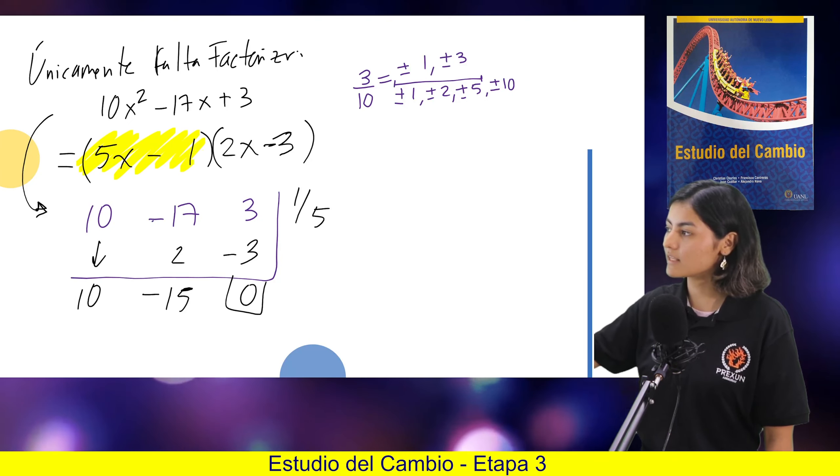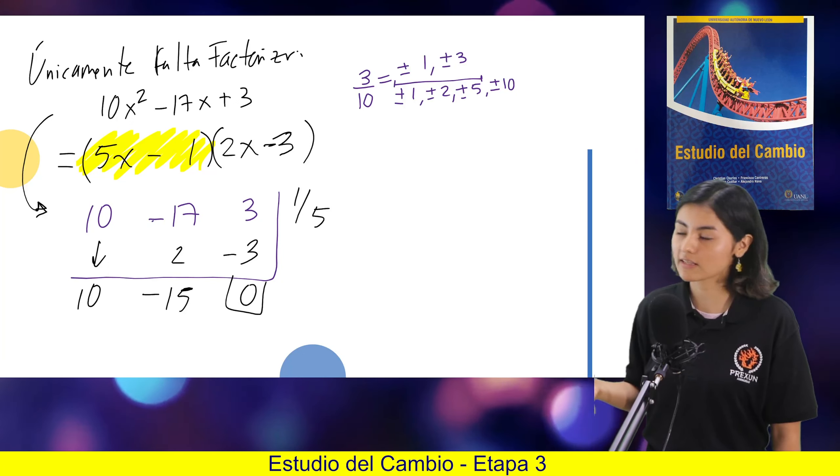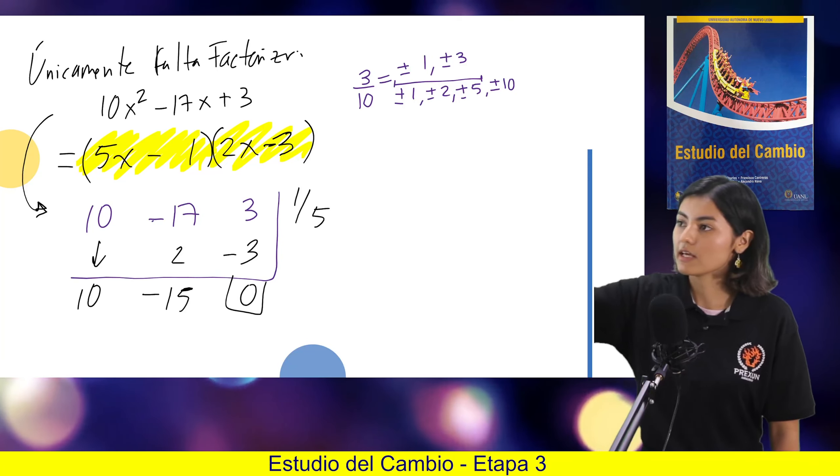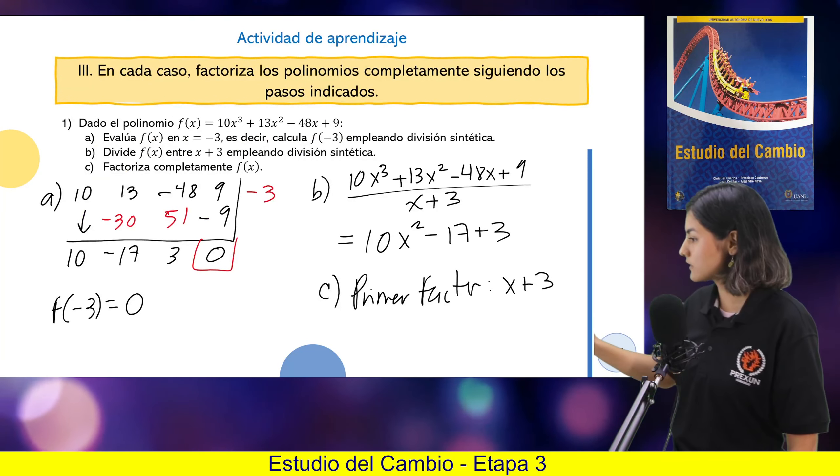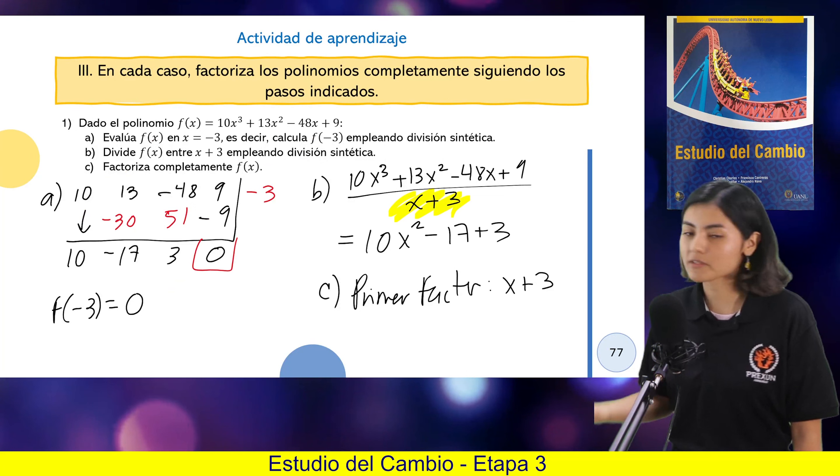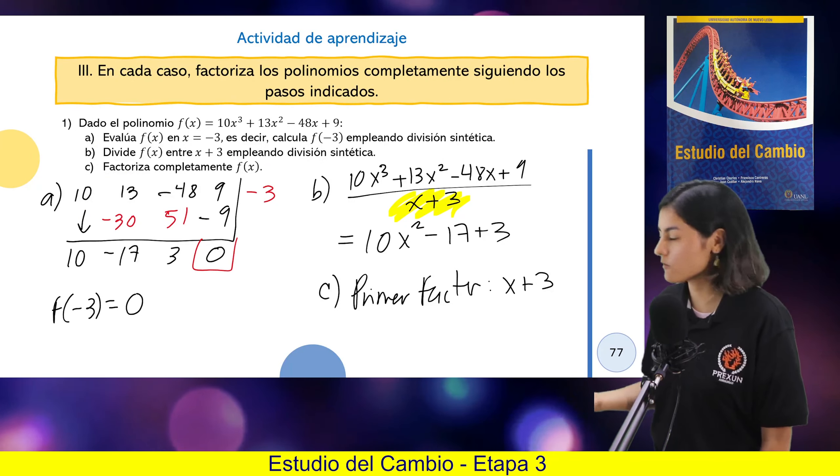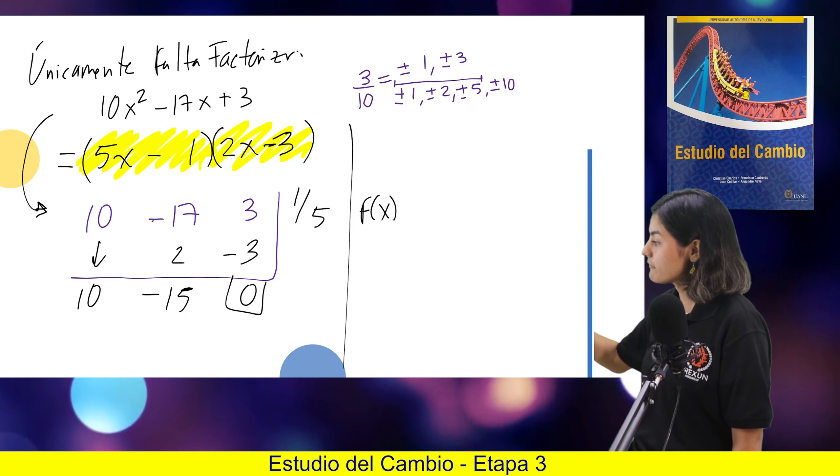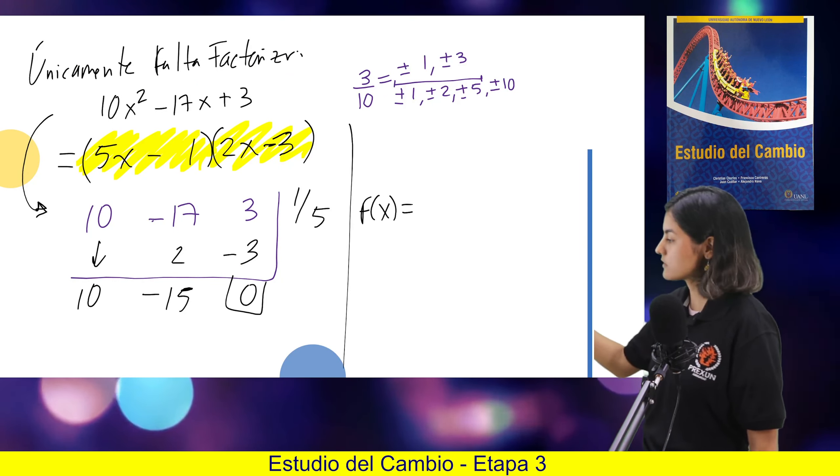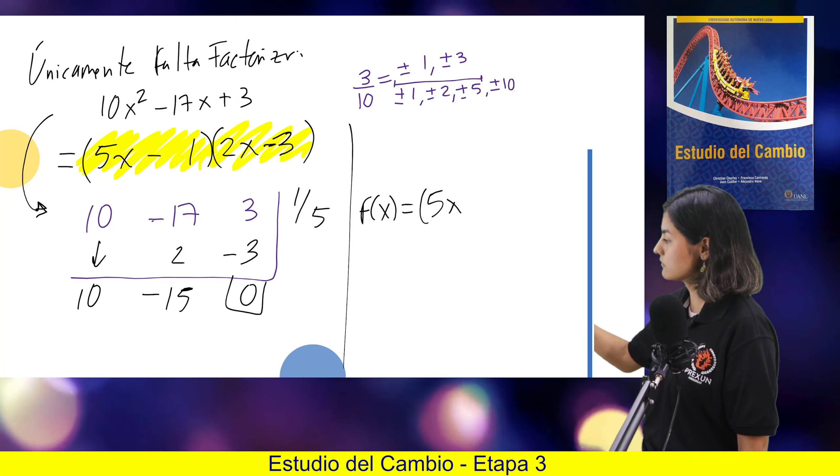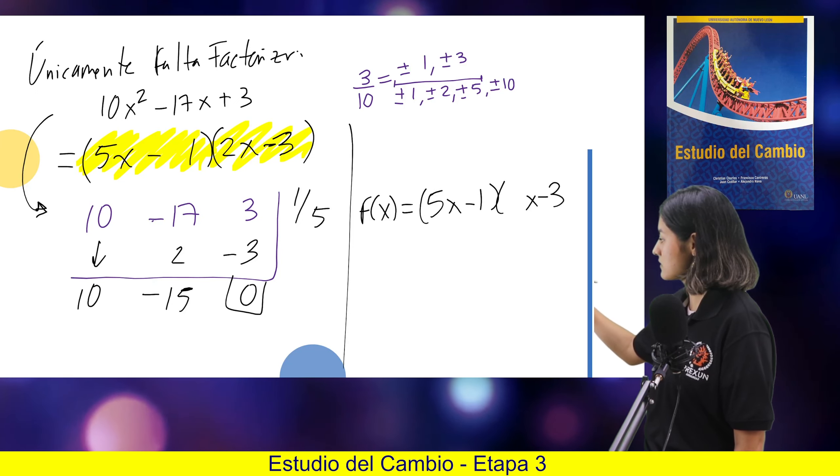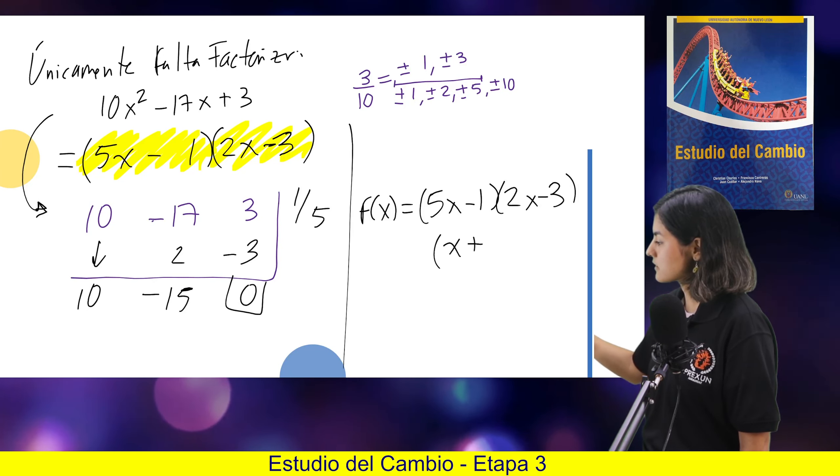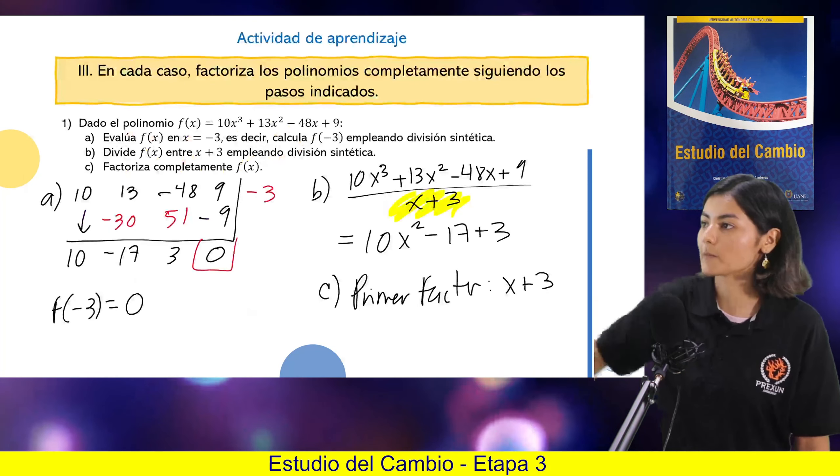Pero pues lo más importante aquí era quedarnos con los factores. Entonces, para el 10x cuadrada menos 17x más 3, es decir, para el cociente, obtuvimos estos dos factores. Y ya habíamos obtenido antes este factor, porque sabemos que el menos 3 nos daba evaluado 0. Entonces, ya nuestra función quedaría factorizada como 5x menos 1 por 2x menos 3 por el x más 3.